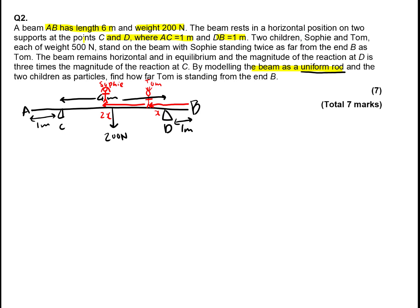Now, two children, Sophie and Tom, each weight 500 Newtons. Stand on the beam, with Sophie standing twice as far from the end of B, this is the end of B here, as Tom. The beam remains horizontal in equilibrium, so we can take moments. And the magnitude of the reaction at D is 3 times the magnitude of the reaction at C. So by modeling the beam as a uniform rod and the two children's particles, find how far Tom is standing from the end B. So there's a couple of things we have to resolve here.